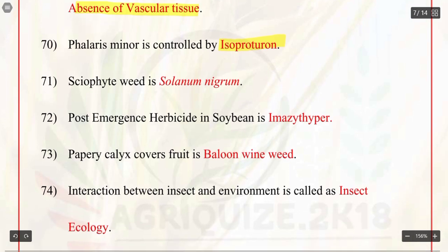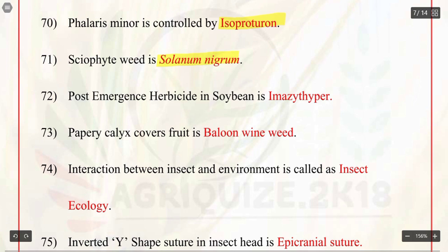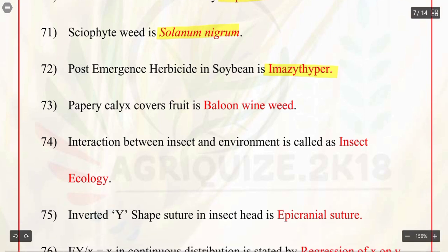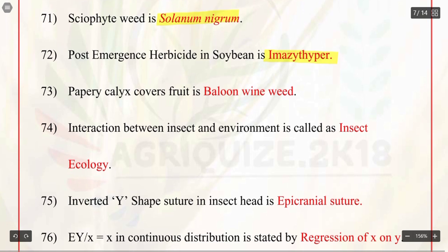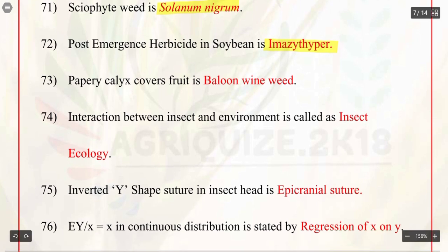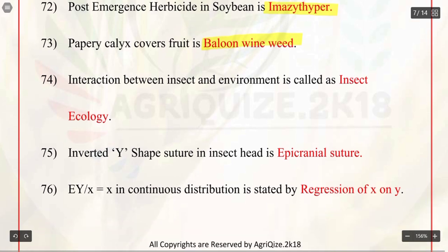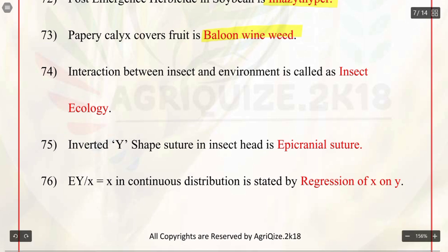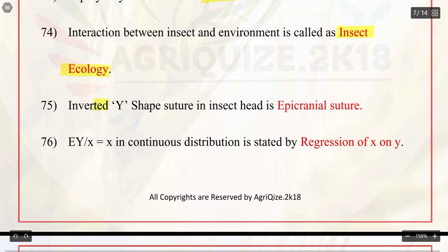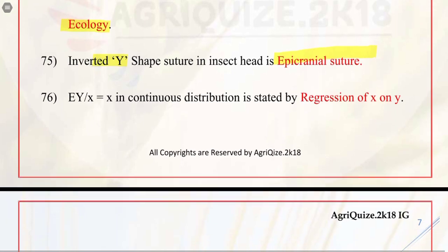Q71. Weed of wheat is Solanum nigrum. Q72. Post-emergence herbicide in soybean is imazethapyr. Q73. Papery calyx covering fruit is balloon vine weed. Q74. Interaction between insect and environment is called as insect ecology. Q75. Inverted Y-shape suture in insect head is epicranial suture.